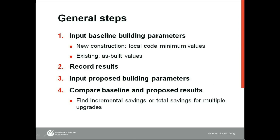What are the general steps for using the back-of-the-envelope calculator? Step one is to input your baseline building parameters. For new construction, that usually means inputting the local code minimum values. For an existing building, that means finding the as-built values and entering them. Once you have your building baseline established, record the results for later comparison purposes. Step three is to input the proposed building parameters — what upgrades are you willing to make to the building, and how will they affect the resulting energy and cost? Then record the proposed building results and find the incremental savings between the baseline and your proposed. You can look at individual measures and find their incremental savings, or look at a host of measures and find how those multiple upgrades affect the building energy use.